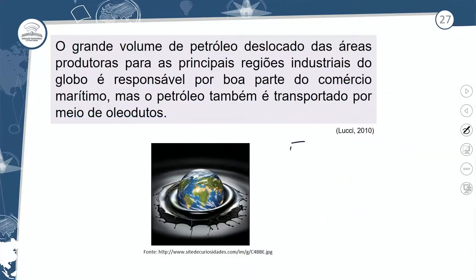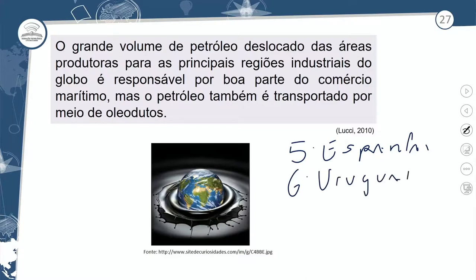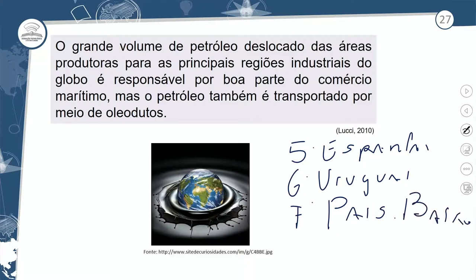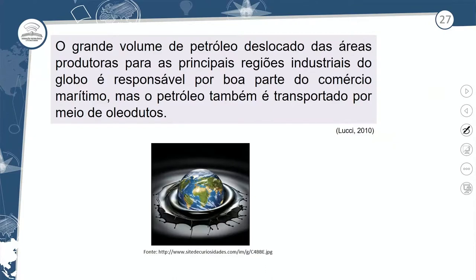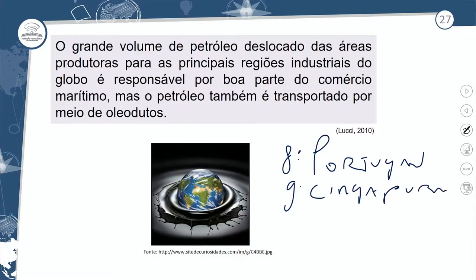Em quinto lugar que mais comprou petróleo do Brasil foi a Espanha, sexto o Uruguai, sétimo os Países Baixos dentro da Europa, oitavo Portugal e nona posição Singapura. Todos em plena expansão do seu polo industrial — tanto países emergentes quanto países desenvolvidos foram os que mais compraram petróleo do Brasil com base em 2019.